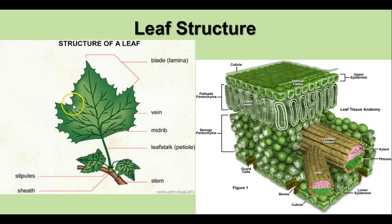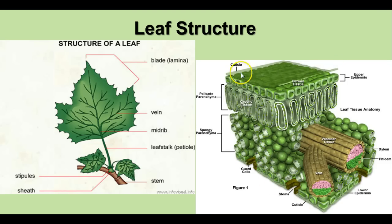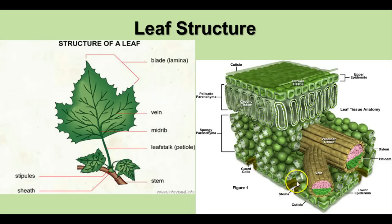Here we have the basic structure of a leaf — the blade with the veins, attached to the stem, usually with a bud there to provide new growth of a branch. In cross-section, we can see the upper and lower epidermis with a waxy cuticle coating on each. The palisade mesophyll cells are stacked up top, the spongy mesophyll is lower down with air spaces in between, veins include xylem and phloem tissue, and on the lower surface you find the stoma surrounded by guard cells.